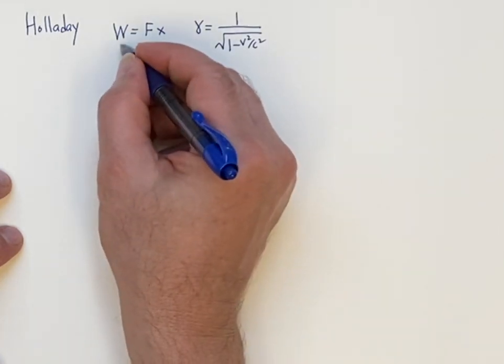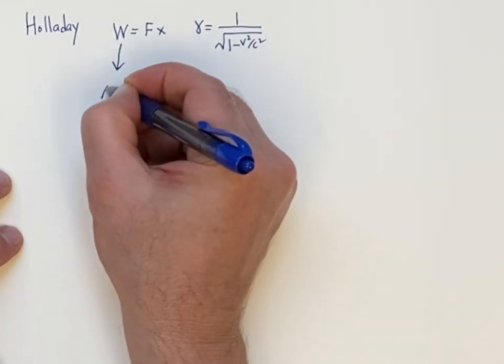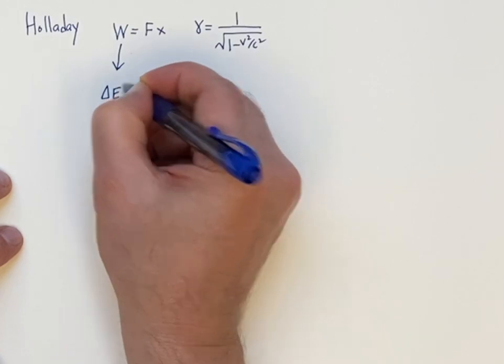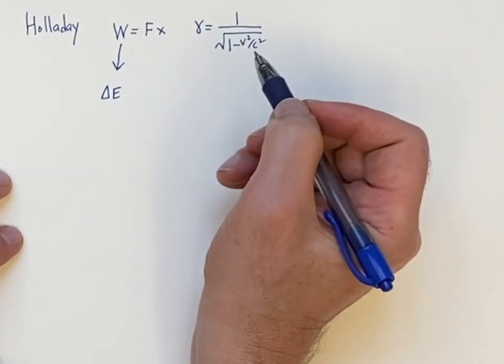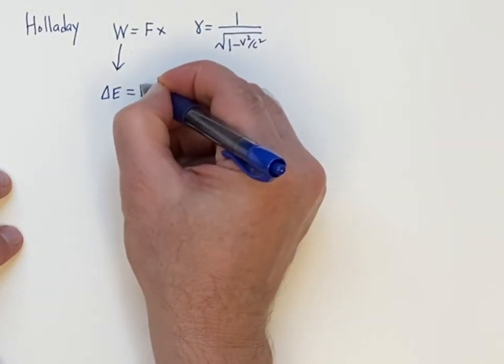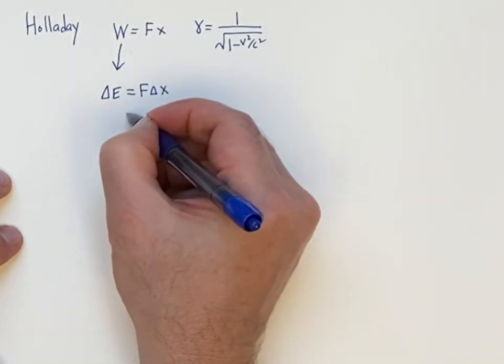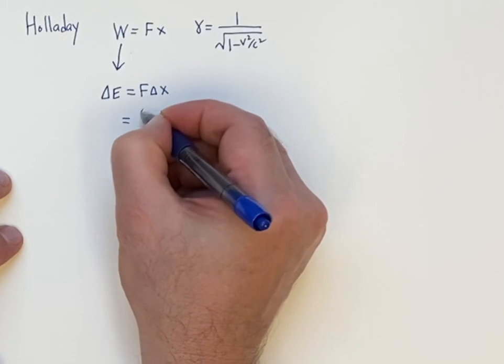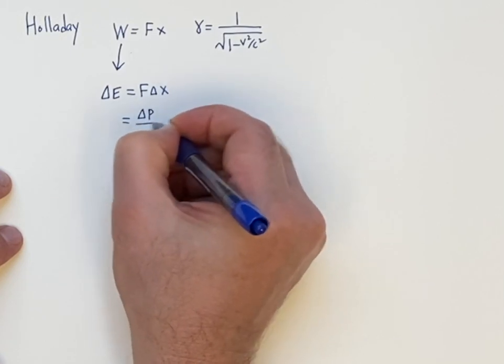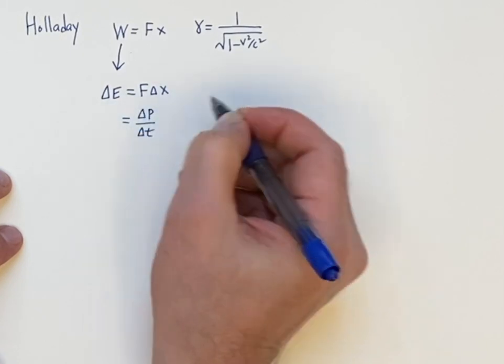So the work energy theorem states that the change of energy of the system is due to the work done. So we're going to write this as F delta X, and then we're going to write for the force change in momentum with respect to time. That's Newton's second law.